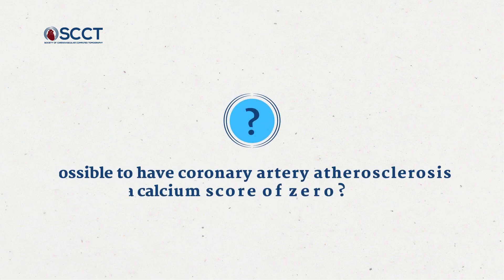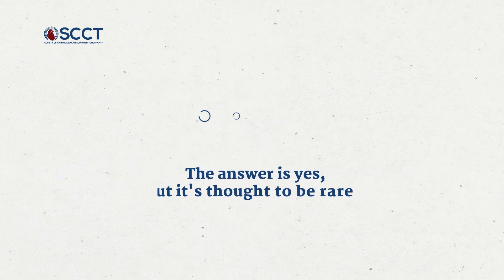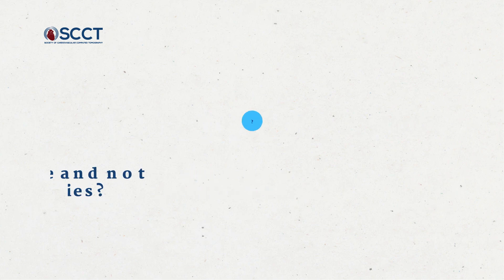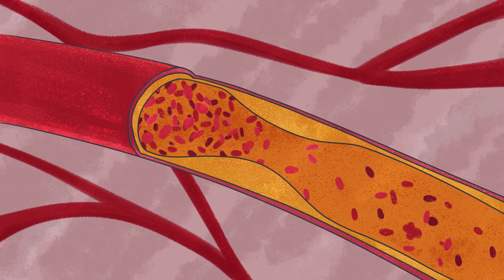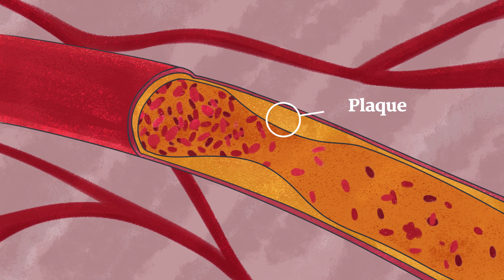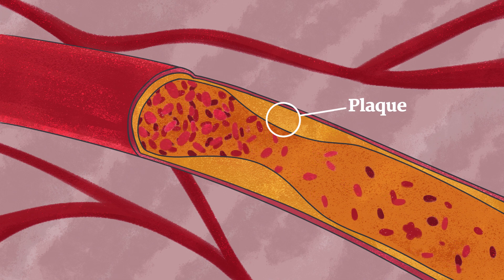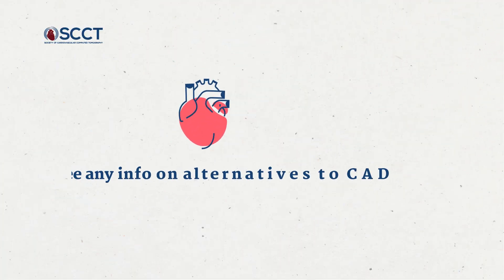A question I often get: is it possible to have coronary artery atherosclerosis yet have a calcium score of zero? The answer is yes, but it's thought to be rare. Conversely, it is possible to have a very high calcium score and not have obstructive disease in the coronary arteries. The calcium score doesn't tell you the whole story. A large part of plaque is beyond the calcium — it's non-calcified plaque, it's thrombi, or it's a plaque that ruptures. We don't see any of that with a calcium score.